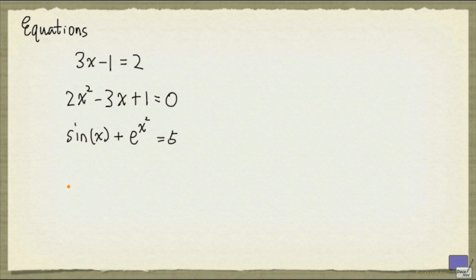Here we have three different equations. Each equation has only one unknown, and that's x. And for each one, the question is, what possible values we can assign to x so that the equation is satisfied?